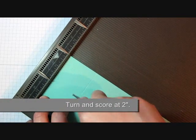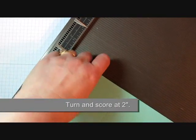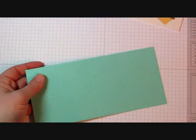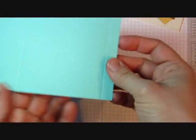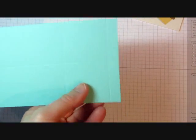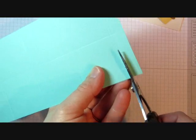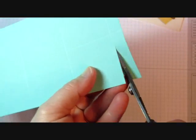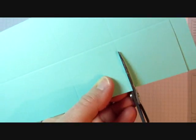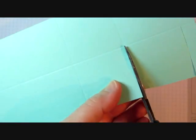Then we're going to turn the cardstock and score it at 2 inches. So what we have is a grid with 2 inch squares, and then at the very end we have this smaller half inch score line. We're going to cut on the bottom score line up to the center perpendicular score line.